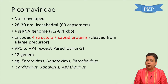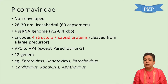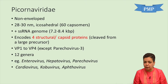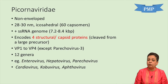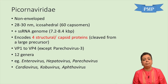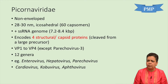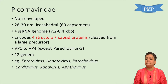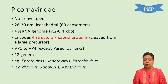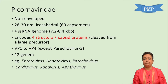There are several genera of picornaviruses, but the important members which cause human disease primarily belong to three genera: enterovirus, hepatovirus, and parechovirus. The ones which cause disease primarily in animals are cardiovirus, cobuvirus, and aftovirus.